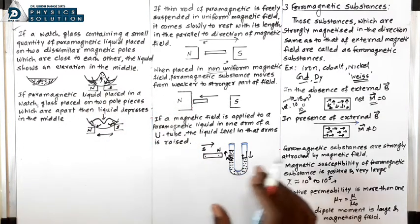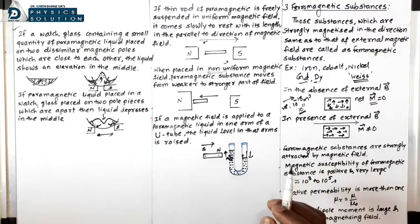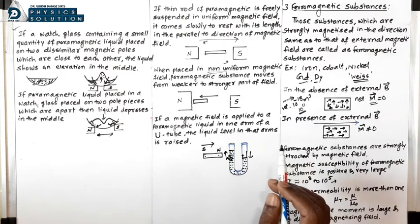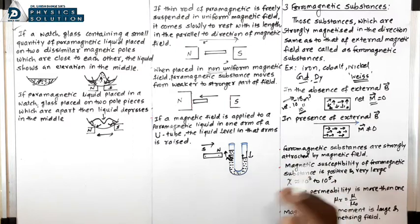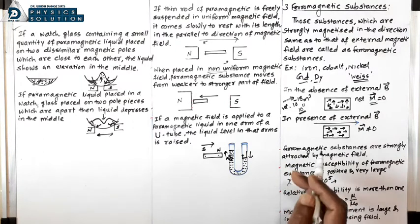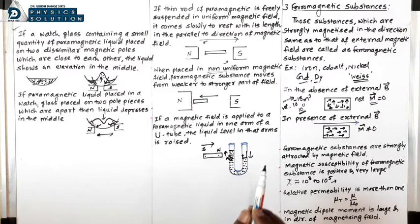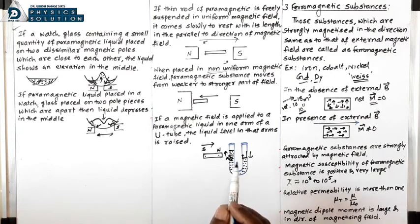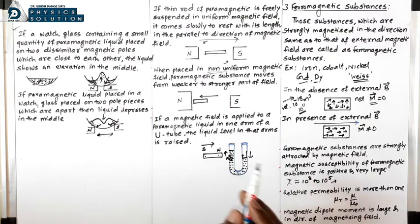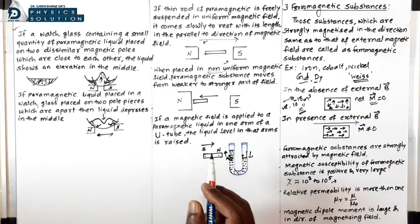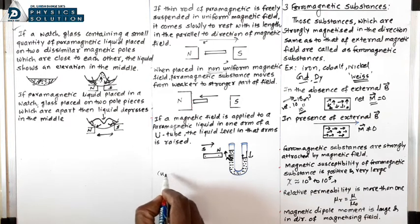There are three types of magnetic substances: diamagnetic, paramagnetic, and ferromagnetic. Their definitions, examples, and characteristics have been discussed in this lecture. Another important property of ferromagnetic substances is that ferromagnetism decreases with increase in temperature. At a particular temperature, ferromagnetic substances lose their magnetism and become paramagnetic substances — such a temperature is known as Curie temperature.